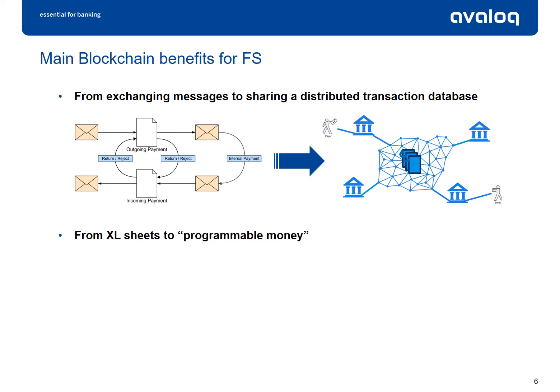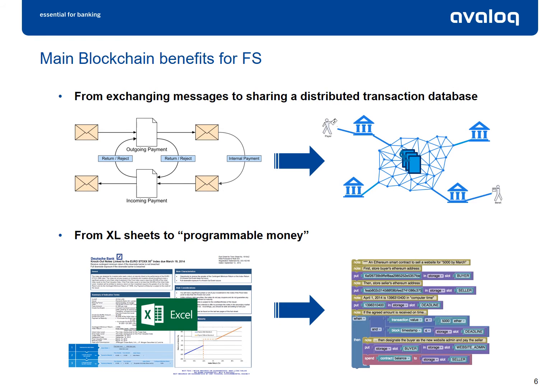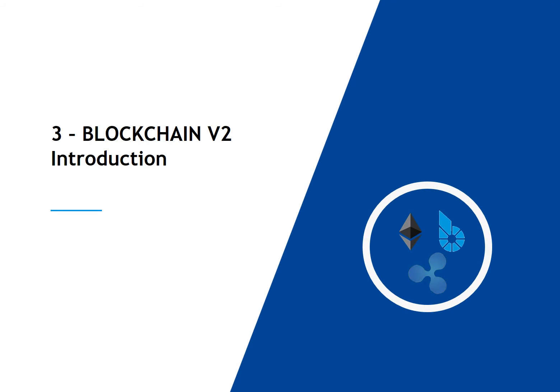Smart contracts, built on top of a blockchain database, bring the capacity of programmable money. They can be used to describe all the terms and conditions of a financial product, an option for example. Having only one instance of this product in the database will allow the parties to have at all times the same view on the product. The point here is to show how the technology developed for Bitcoin can be reused for other purposes. The principles that Nakamoto was already mentioning in his paper have a wider range than only cryptocurrencies.